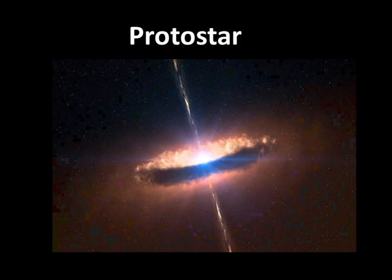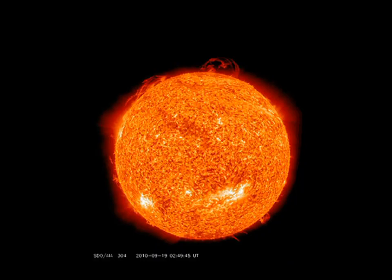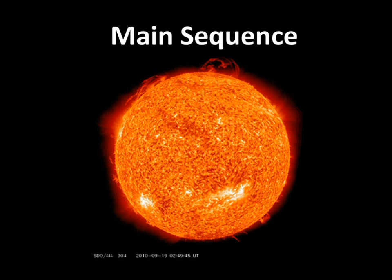Once there's enough mass for nuclear fusion to be achieved, the star becomes a main sequence star. We've seen that on the HR diagram — the whole band of main sequence stars. This is where nuclear fusion is going on, and a star spends most of its lifetime here in the main sequence. We saw that too, where most of the stars were grouped in that main sequence area on the HR diagram.